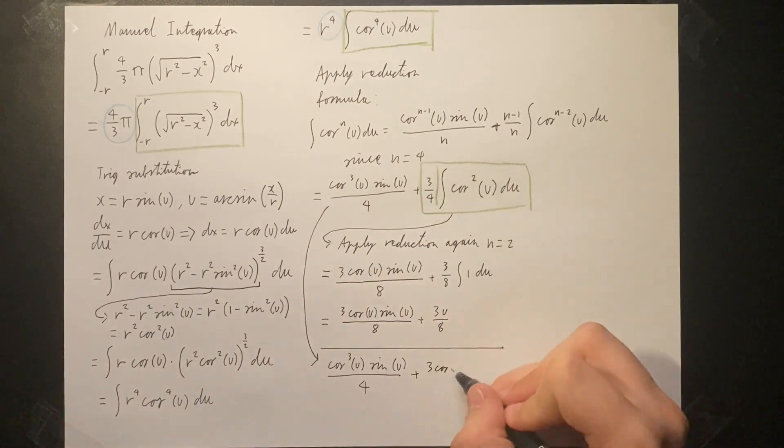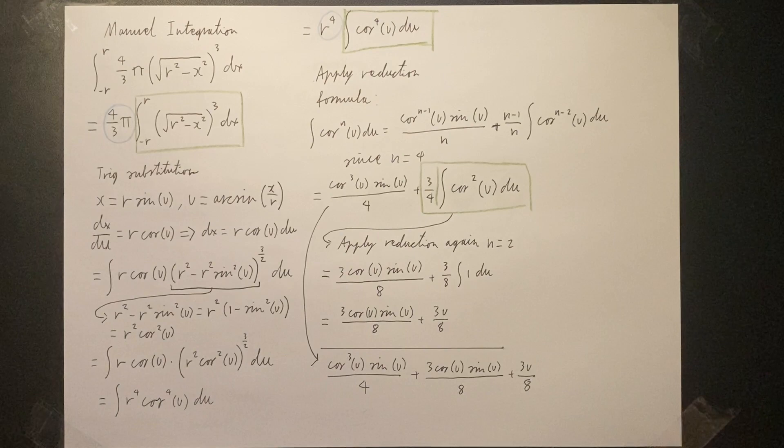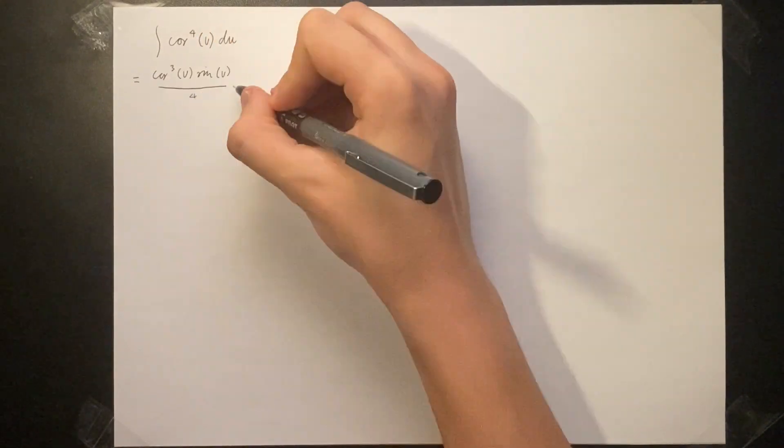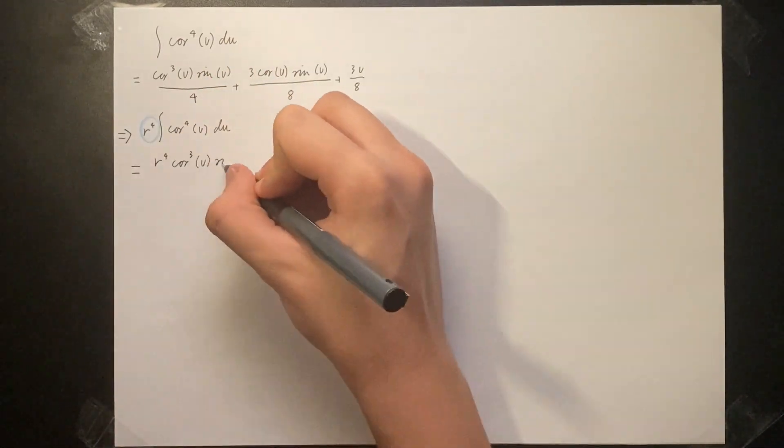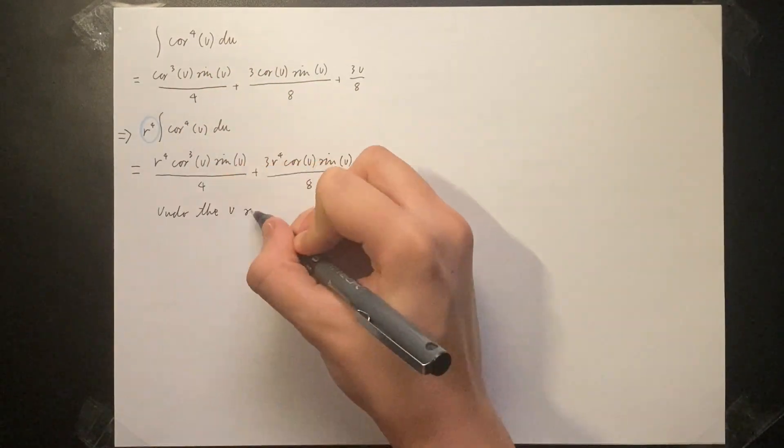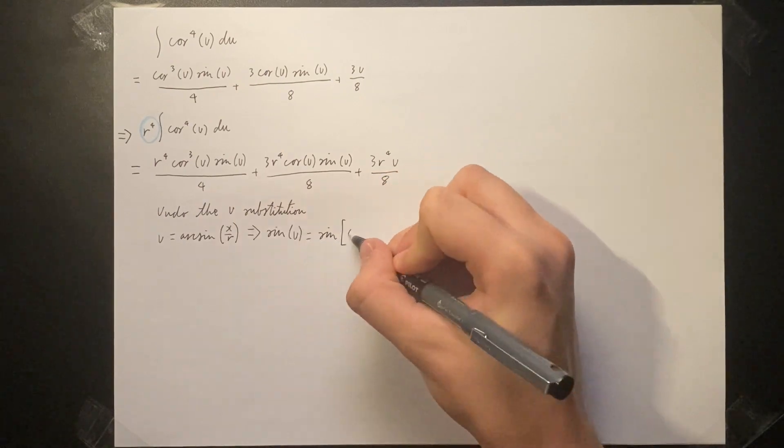Putting everything back together and we have solved the integral of cosine to the fourth of u. We can now reintroduce the constant r to the fourth from before. Now we can undo the u substitution. We know that u was equal to arc sine of x over r.